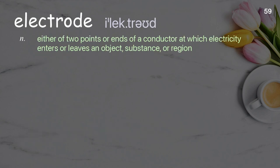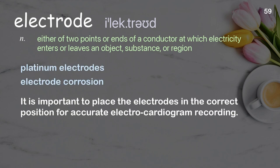Electrode. Either of two points or ends of a conductor at which electricity enters or leaves an object, substance, or region. Examples: platinum electrodes, electrode corrosion. It is important to place the electrodes in the correct position for accurate electrocardiogram recording.